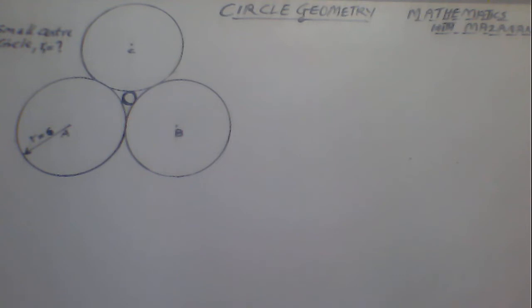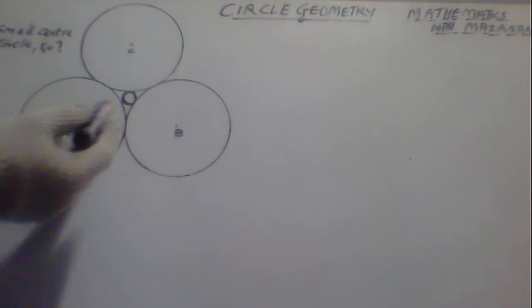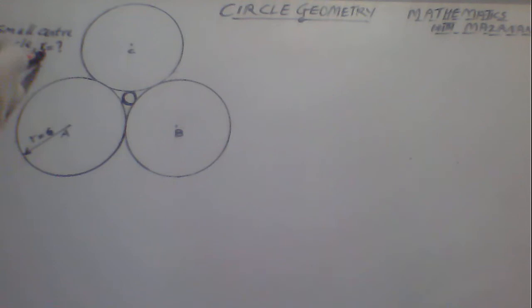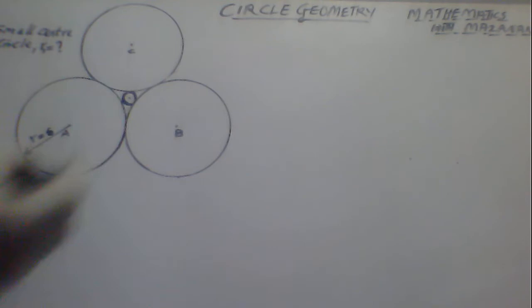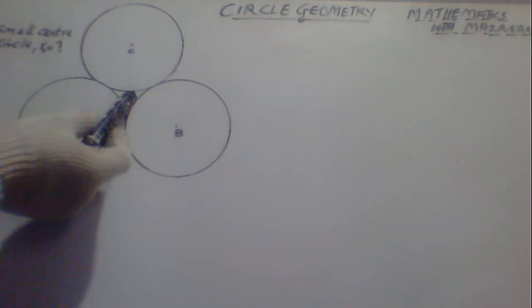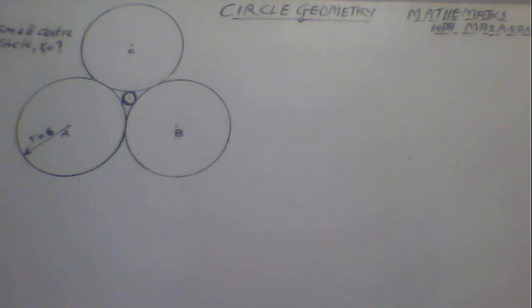Good day students. Today we have circle geometry: three circumscribed congruent circles with radius 5 cm, and there is another small circle at the center. You are required to find the radius of this small circle, that is r1. The first thing to notice is that the small circle touches the other big circles — it is tangent to them, touching at only one point.